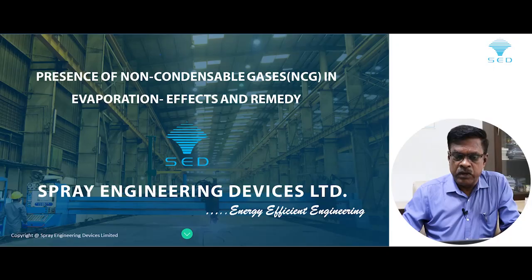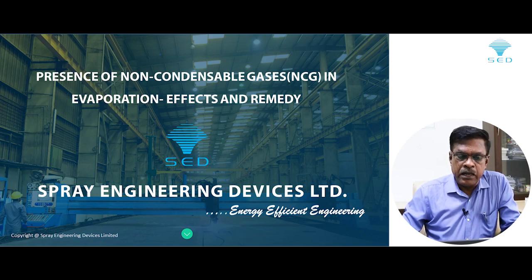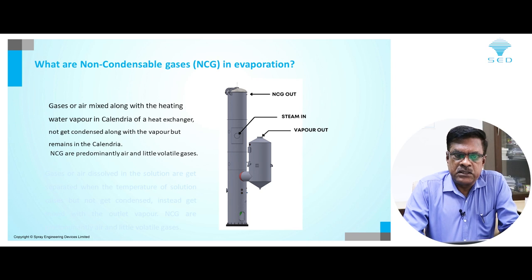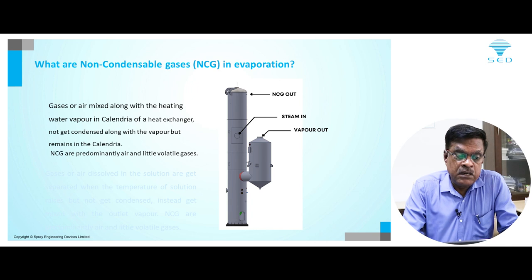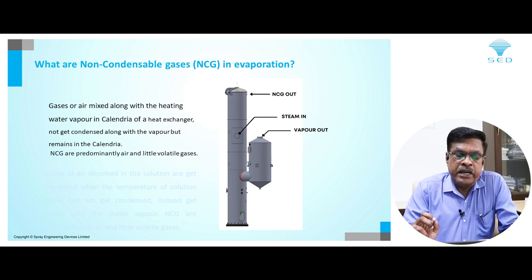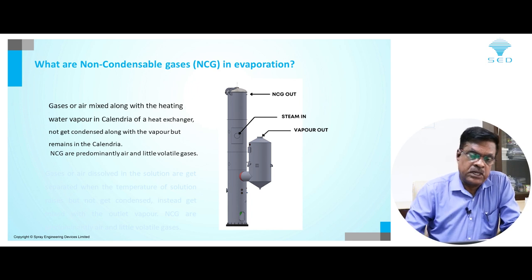The topic selected is the presence of non-condensable gases in evaporation — effects and remedies. Non-condensable gases in evaporation are gases or air mixed along with the heating water vapor in the calendria of a heat exchanger, but they do not get condensed along with the vapor and remain in the calendria. These are called non-condensable gases, and this is predominantly air and very little volatile gases which have high boiling points.